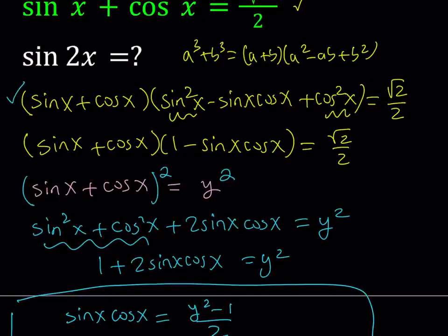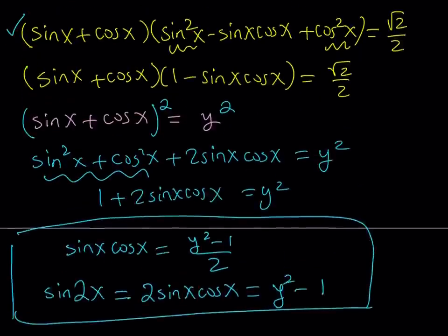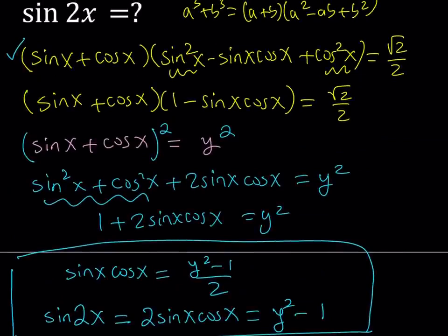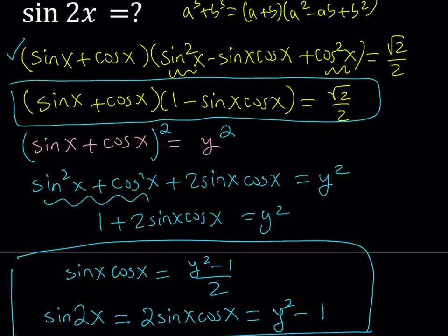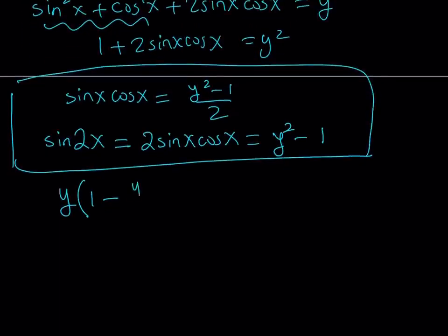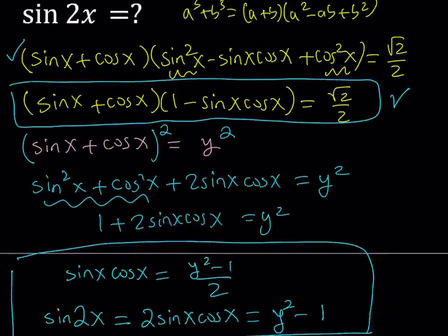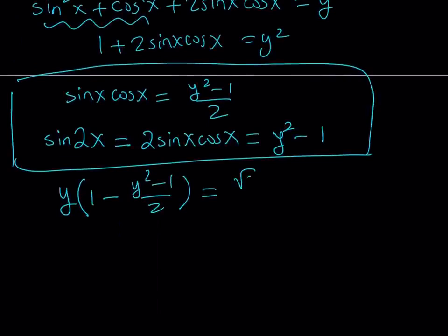In the factored form, I replace sine x plus cosine x with y. Then 1 minus sine x cosine x becomes 1 minus (y squared minus 1) over 2. So the equation becomes y times (1 minus (y squared minus 1)/2) equals square root of 2 over 2. This gives us our equation in a single variable y.